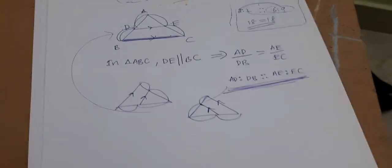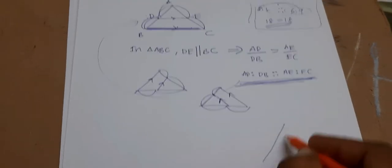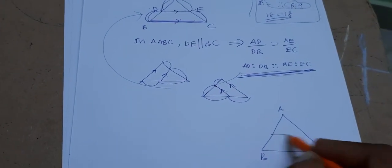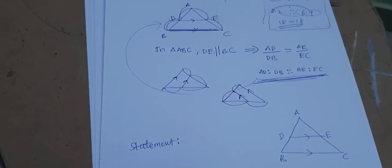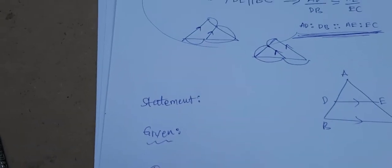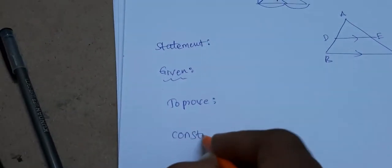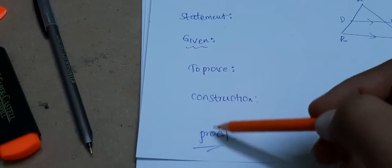So how do we prove this theorem? In a simple way, I will explain. Let me take the triangle ABC with parallel side DE. You must write the first statement. The format to follow is: Statement, Given, To Prove, Construction, and Proof. These particulars you must follow to prove this theorem.